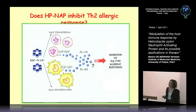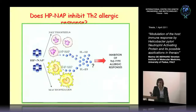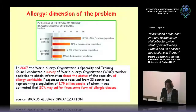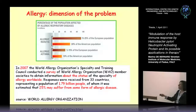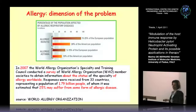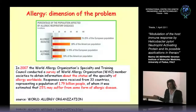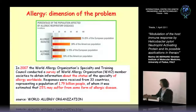On the basis of this data, we were interested to investigate whether HPNAP could inhibit the Th2 allergic response. Allergy is a worldwide problem — a 2007 survey estimated that 25% of people may suffer from some form of allergic disease. There are several medical approaches, many pharmacological and symptomatic such as antihistamines, but there is also vaccination against allergy which frequently fails.